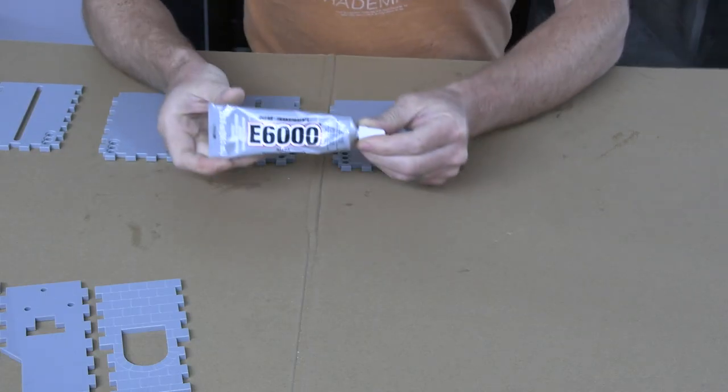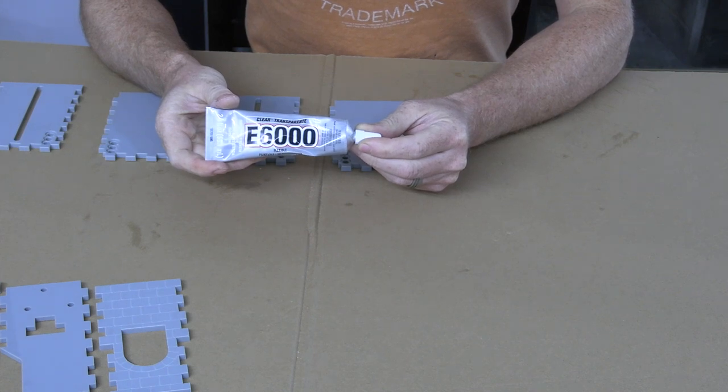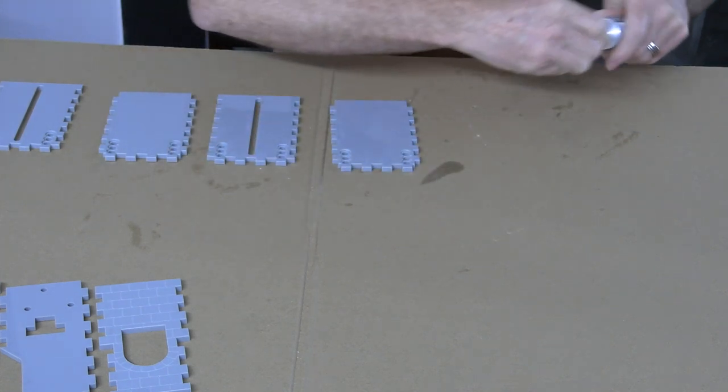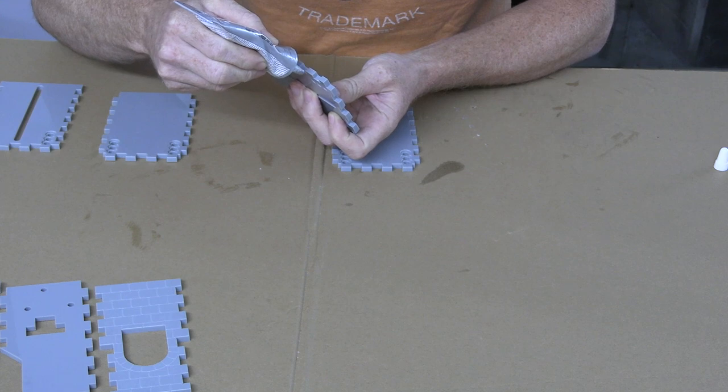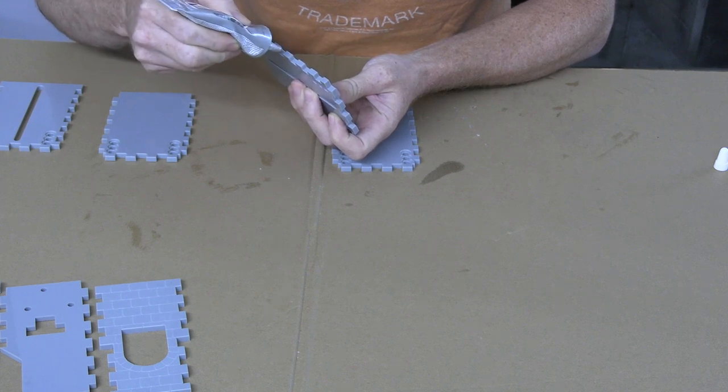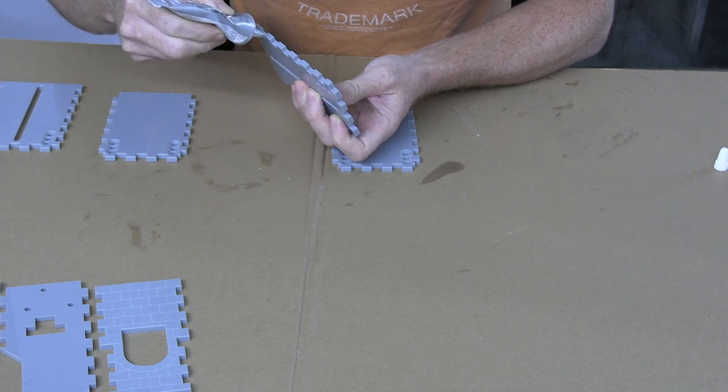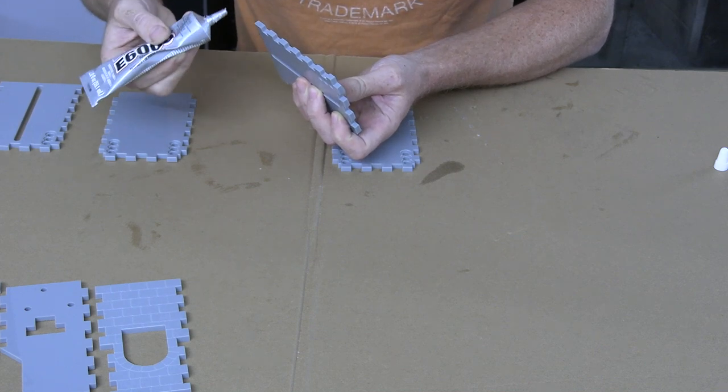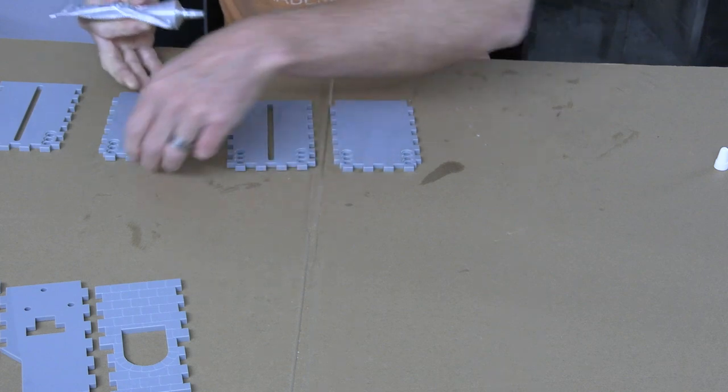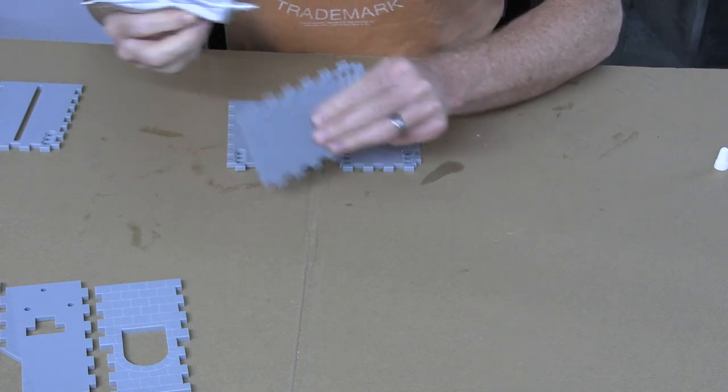In order to glue the acrylic pieces together, I like to use E6000. Not because it's the strongest glue, but because it's flexible and it takes a long time to dry. If you make a mistake, or if you need to readjust something, it's nice to be able to move things around or take them completely apart and re-glue them. If you were to use a plastic weld or some type of super glue, you'd be unable to do this.